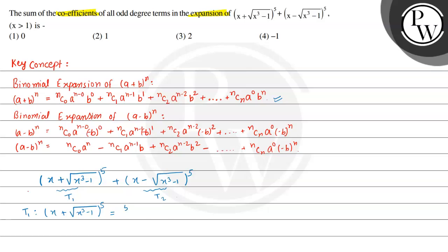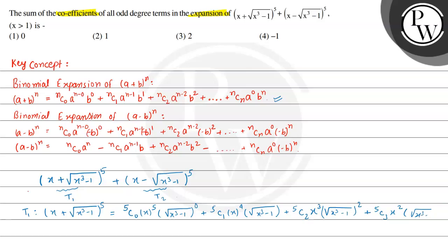Expanding t1 using the binomial formula with n=5, we get: 5C0·x⁵·(√(x³-1))⁰ + 5C1·x⁴·(√(x³-1))¹ + 5C2·x³·(√(x³-1))² + 5C3·x²·(√(x³-1))³ + 5C4·x·(√(x³-1))⁴ + 5C5·(√(x³-1))⁵. We consider this equation 1.